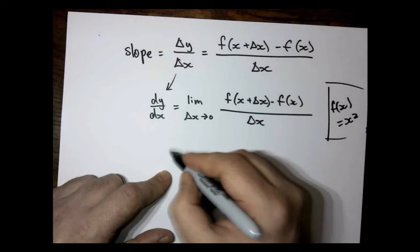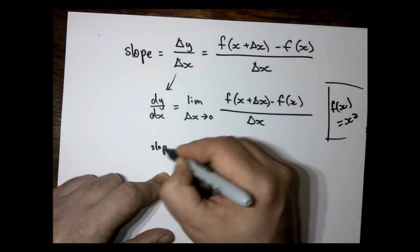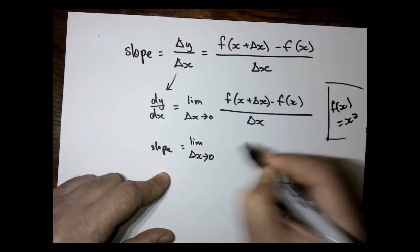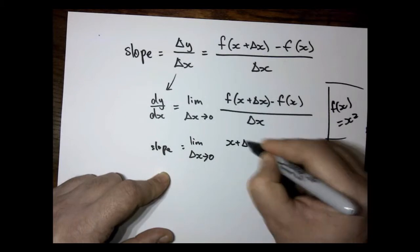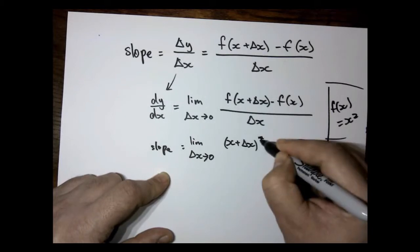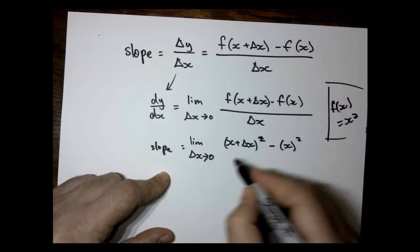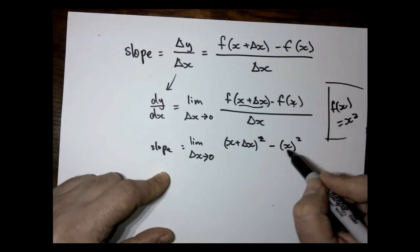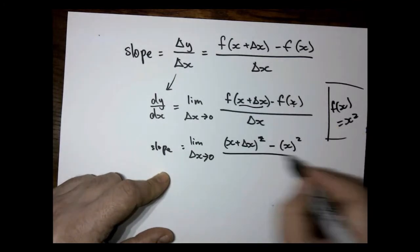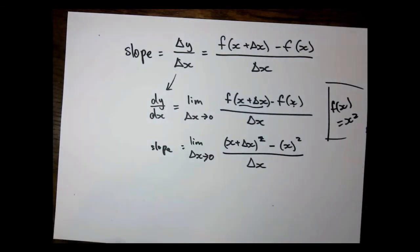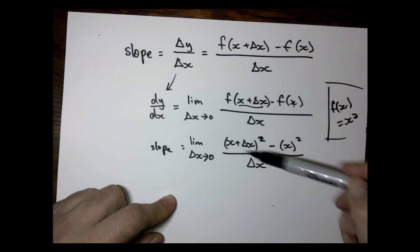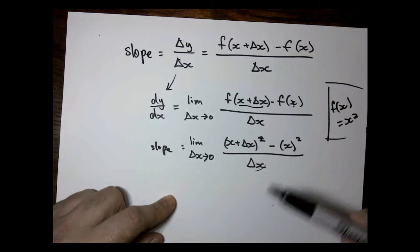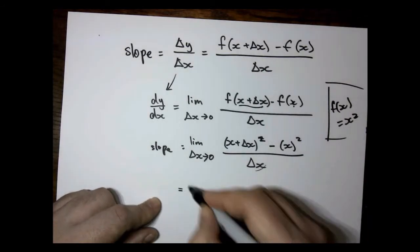It's given by the limit. As we put in x plus delta x, and we square it because that's what we do, and we put in x squared here. The issue here is going to be that we do not have a way to divide by zero, but instead we let the limit, we look at the limit as this thing approaches zero. So to do that, I think you're going to have to do a little bit of algebra trickery.